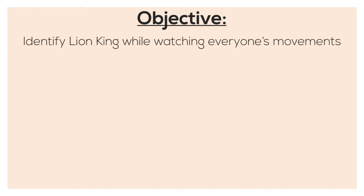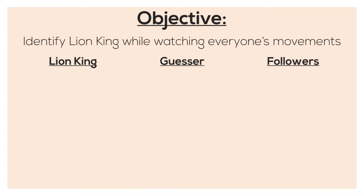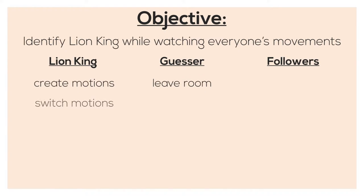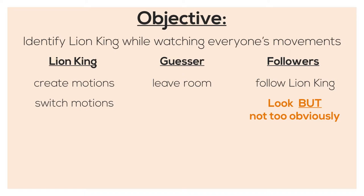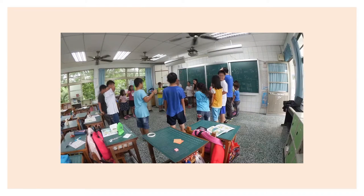Students will first have to understand that the objective of the game is to guess who the lion king is while watching everyone's movements. They will also have to understand that there are three separate roles: the lion king, the guesser, and the followers. The guesser will have to leave the room. The lion king will have to create motions and constantly switch motions, and everyone else has to follow along as quickly as possible. The trick is everyone has to look at the lion king in order to follow along, but they should not be looking too obviously, or else the guesser would know who the lion king is.